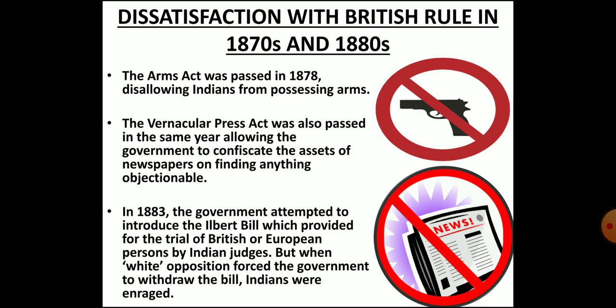There were many events and incidents that occurred during this period that increased dissatisfaction in the 1870s and 1880s. For example, in 1878 the Arms Act was passed, according to which Indians were not allowed to possess arms and weapons. In the same year, the Vernacular Press Act was also enacted. This act forbade any provocative writing in regional languages against the government.